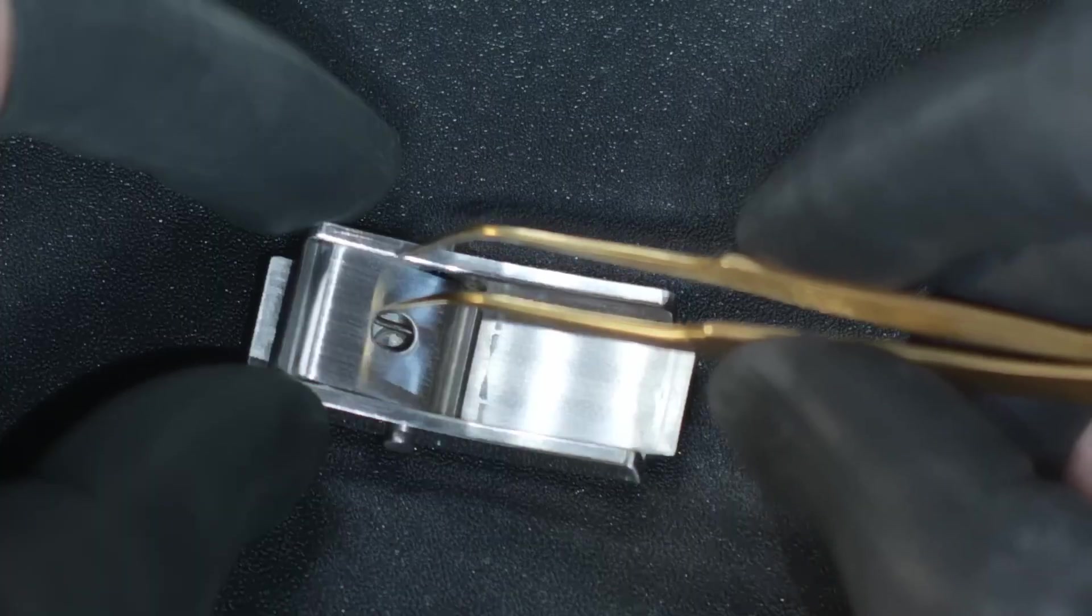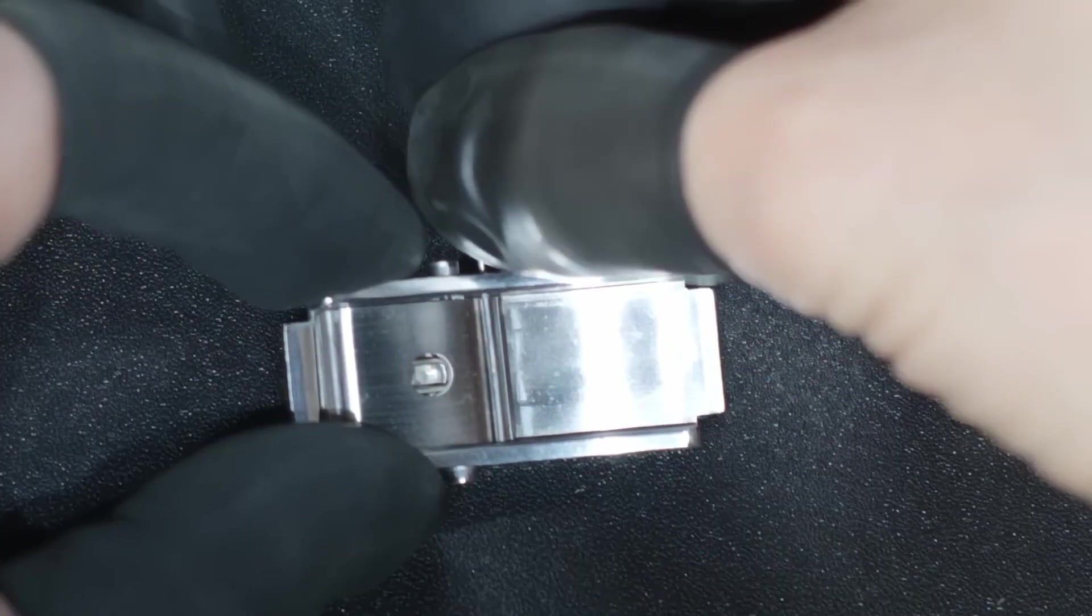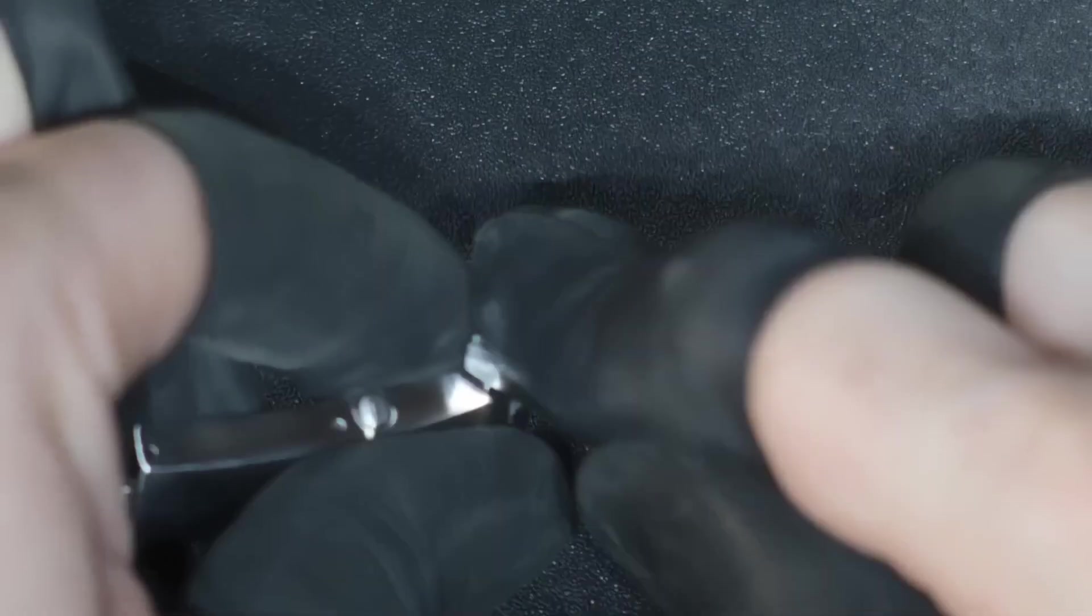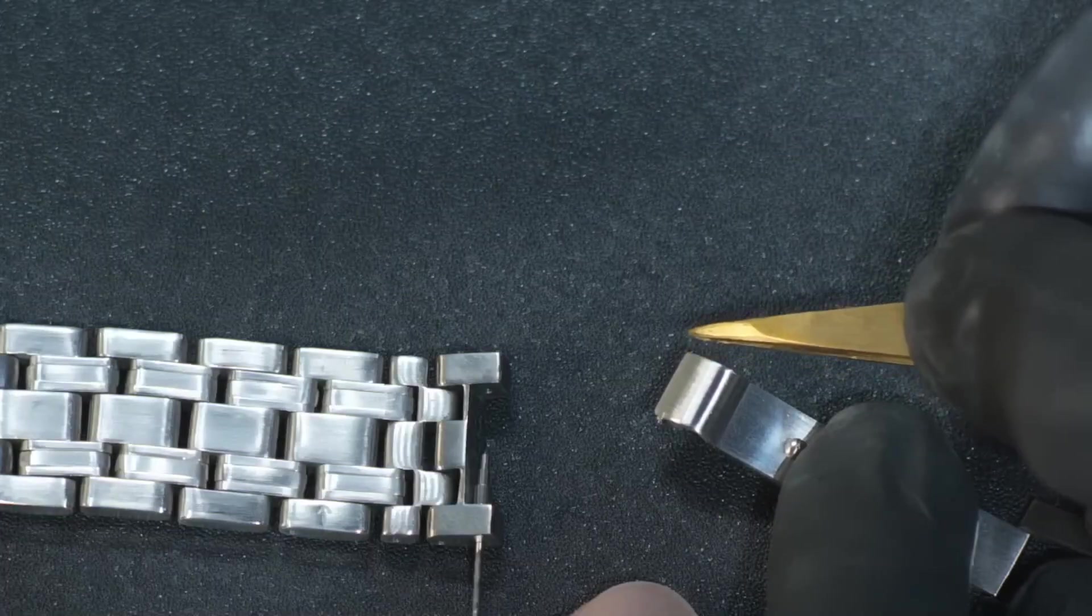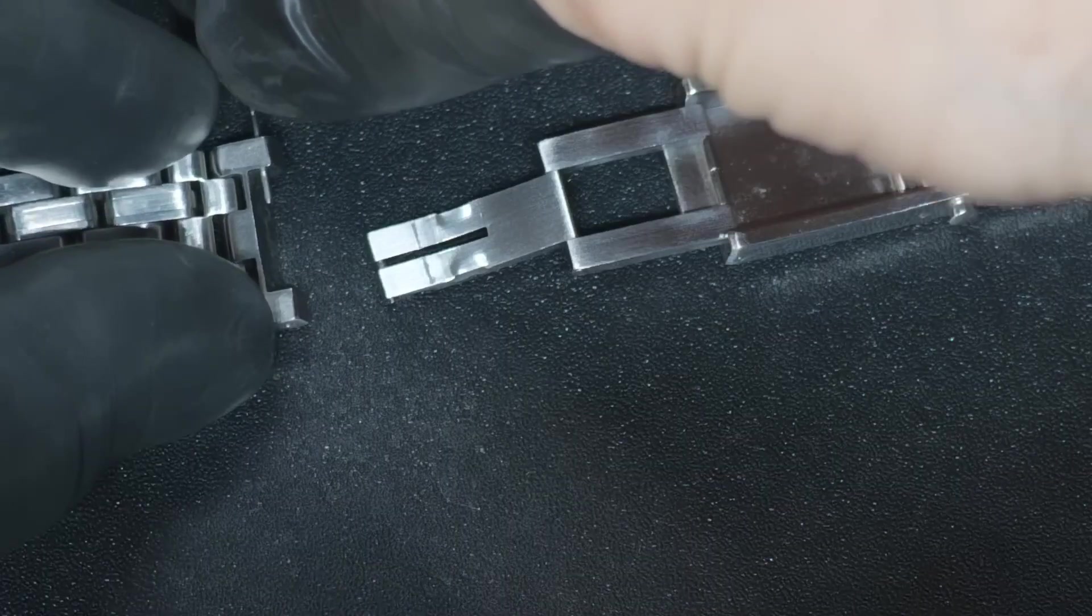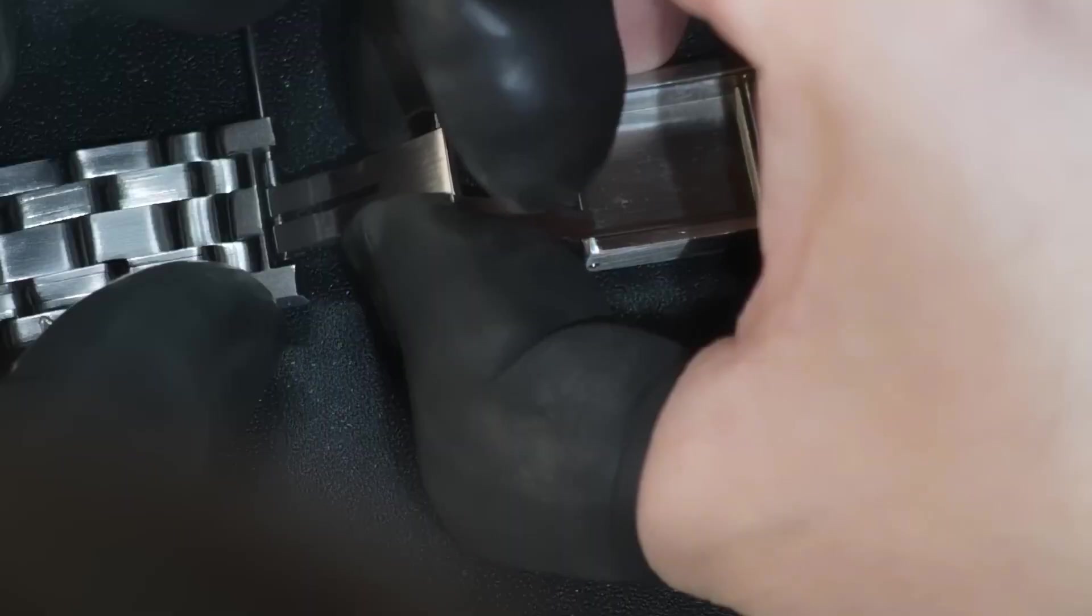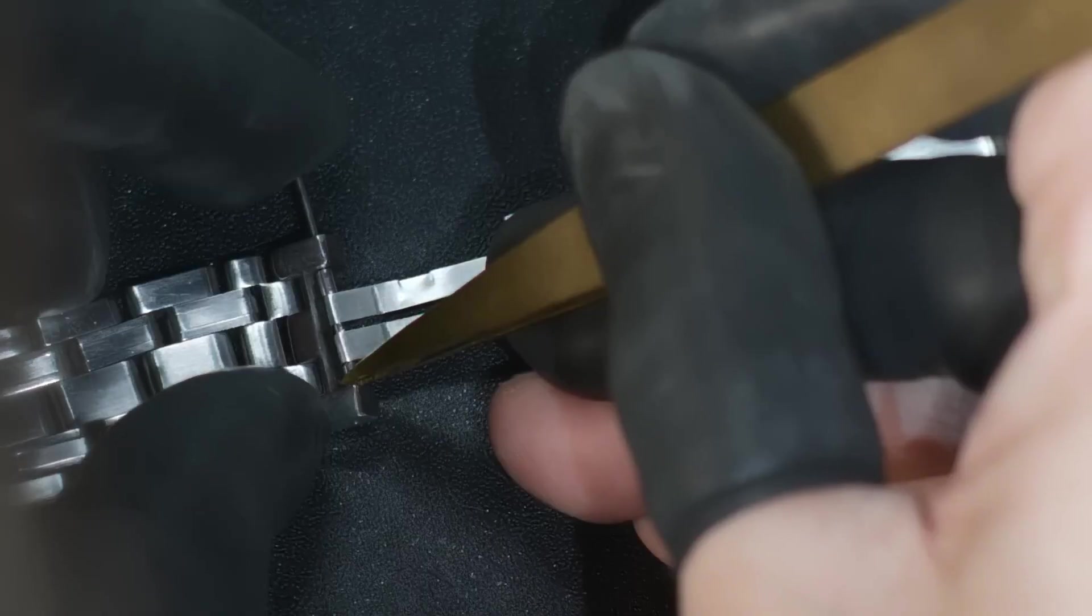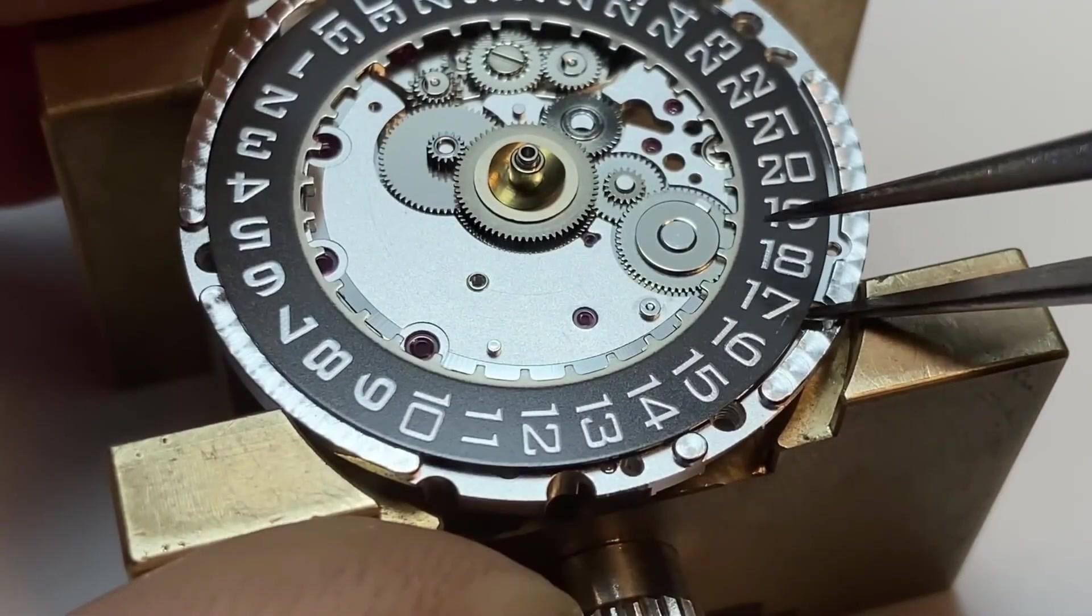Bracelet crafting follows. Links are shaped, assembled, and finished so they move with effortless fluidity on the wrist. The comfort must equal the beauty. Finally, every watch undergoes a last inspection. Under harsh lights, specialists scrutinize every surface. No flaws, no exceptions.